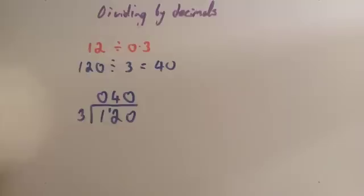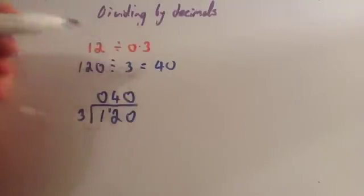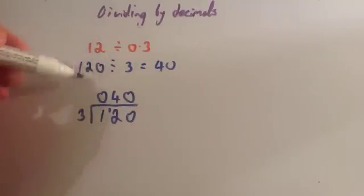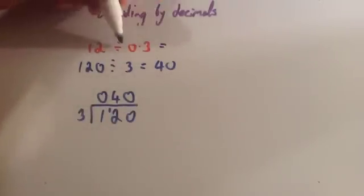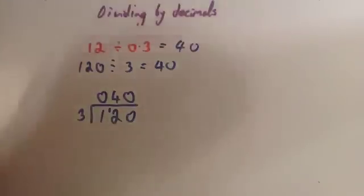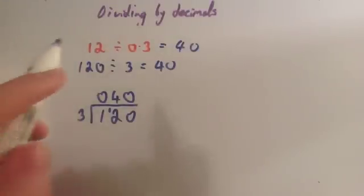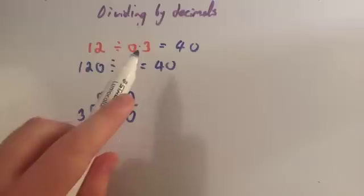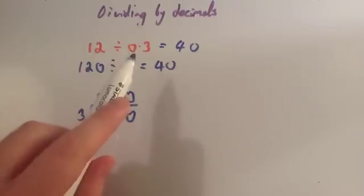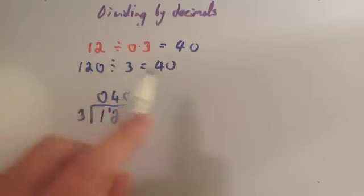From what you just seen, multiplying by 10 doesn't affect the answer, as long as you're multiplying both the number you're dividing and the number you're dividing by. So 12 divided by 0.3 is also 40. The key to dividing by decimals is making the number you're dividing by a whole number — an integer — and then you can do it using short division really easily.